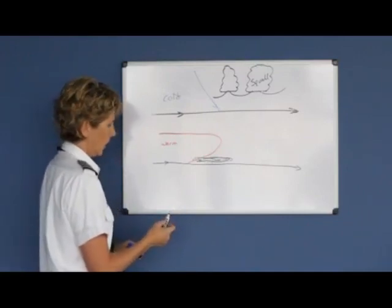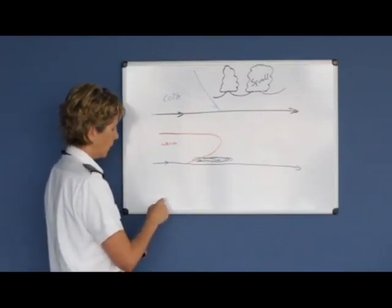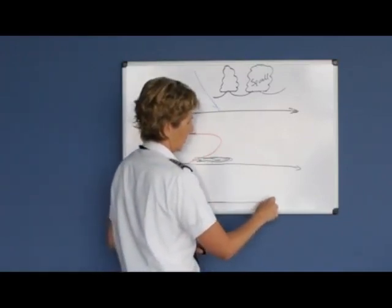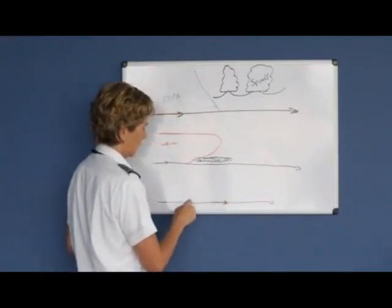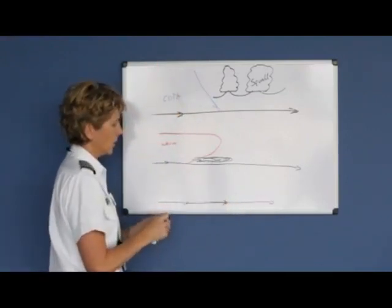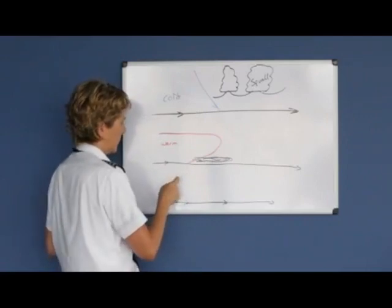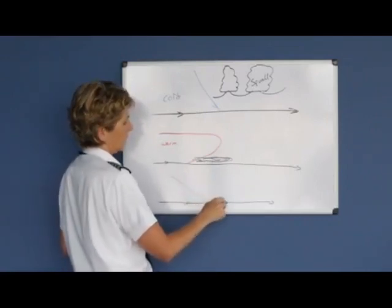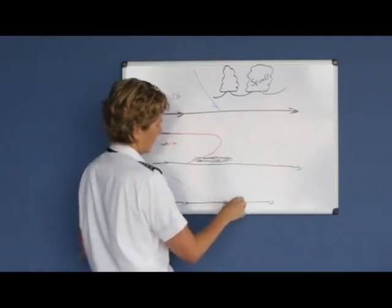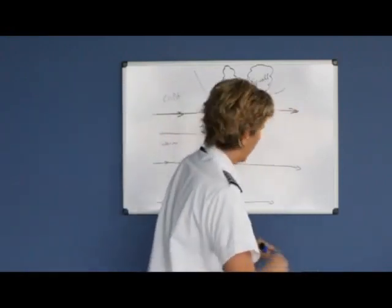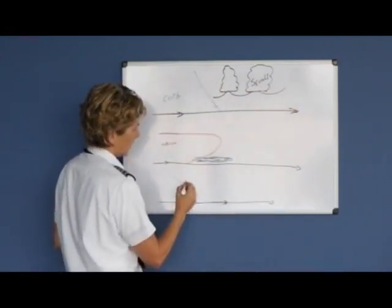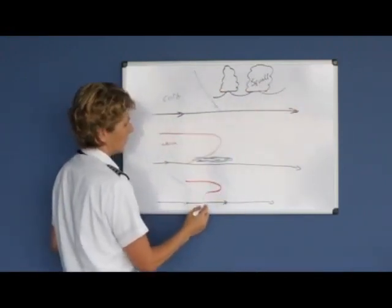And then the last front would be an occluded front. An occluded front is, this is the direction of motion, is when we had cold air that was catching up to warm air, that was catching up to cold air. So now we have all three temperatures kind of merging in there together.